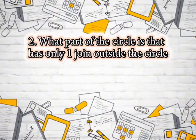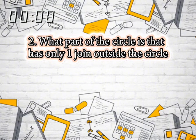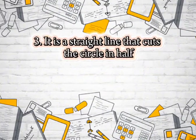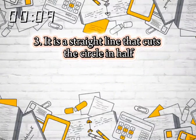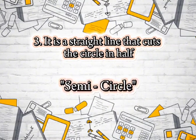Number two. What part of the circle has only one point of contact outside the circle? It is the tangent line. Three. It is a straight line that cuts the circle in half. It's the semicircle.